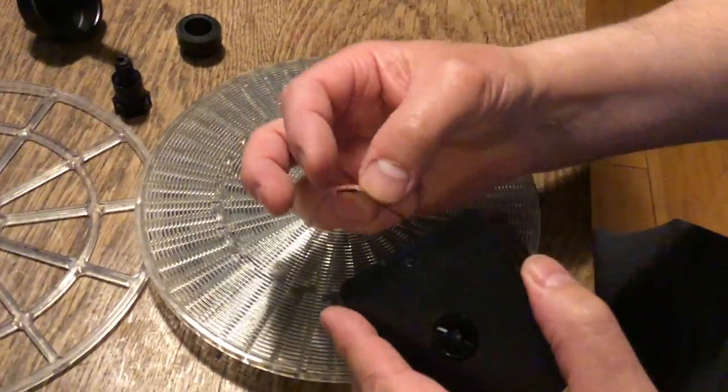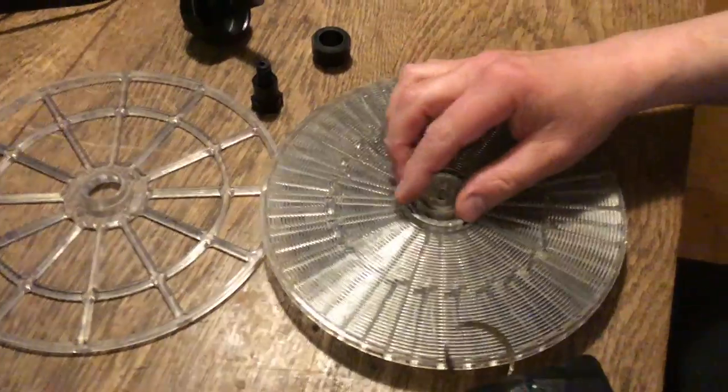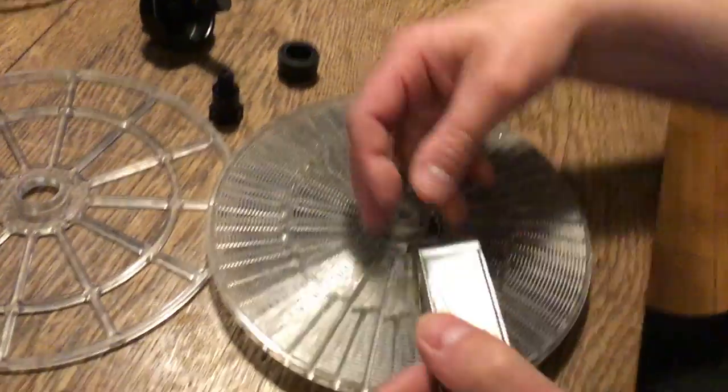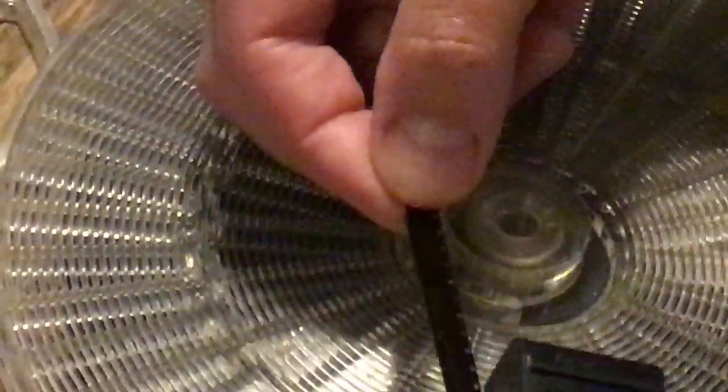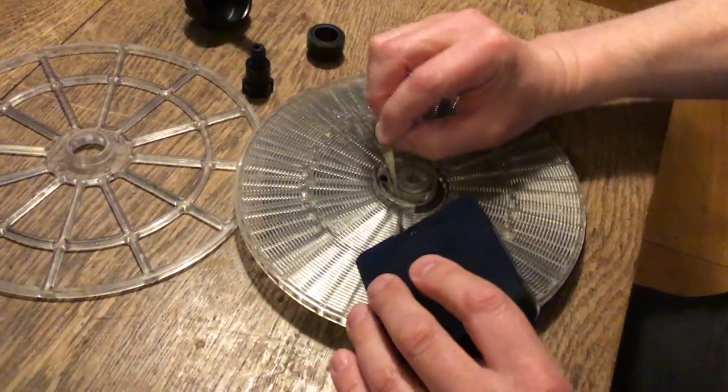These sprocket holes need to go down. So what I'm going to do is use this to hold the film while I use the spiral. If you look, the circular bit is on the outside here in my left hand, and the sprockets are down and the emulsion is out.